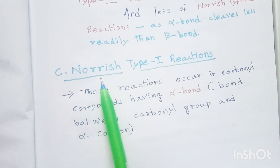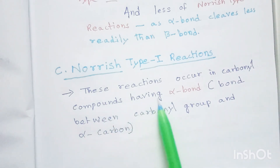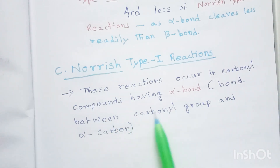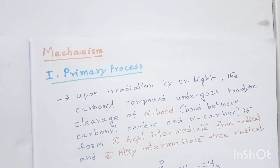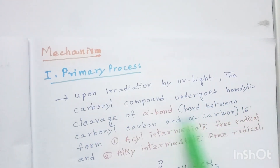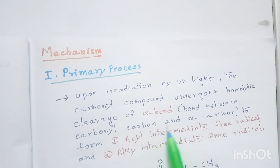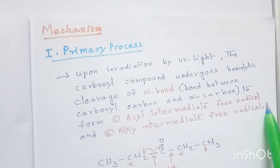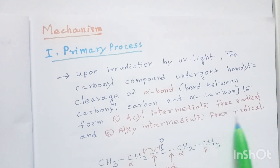Now let us see Norrish type 1 reactions. These reactions occur in carbonyl compounds having an alpha bond — that is the bond between the carbonyl group and the alpha carbon. In the primary process, upon irradiation by UV light, the carbonyl compound undergoes homolytic cleavage of the alpha bond to form an acyl intermediate free radical and an alkyl intermediate free radical.